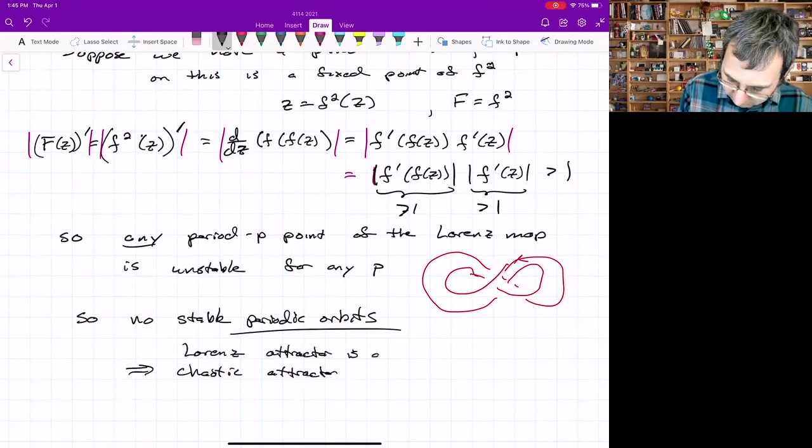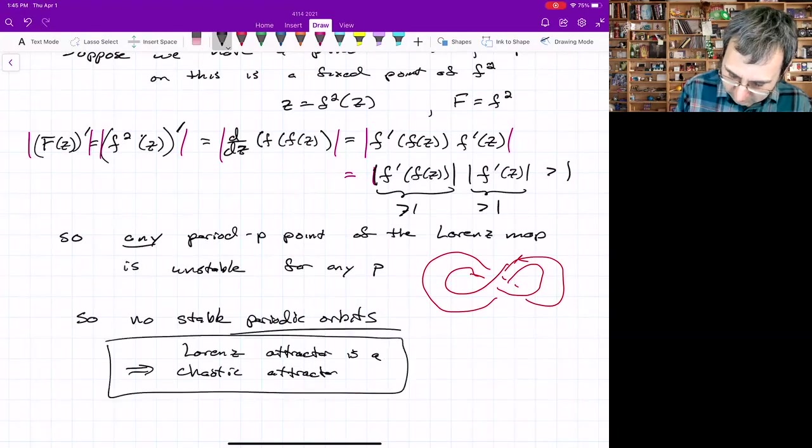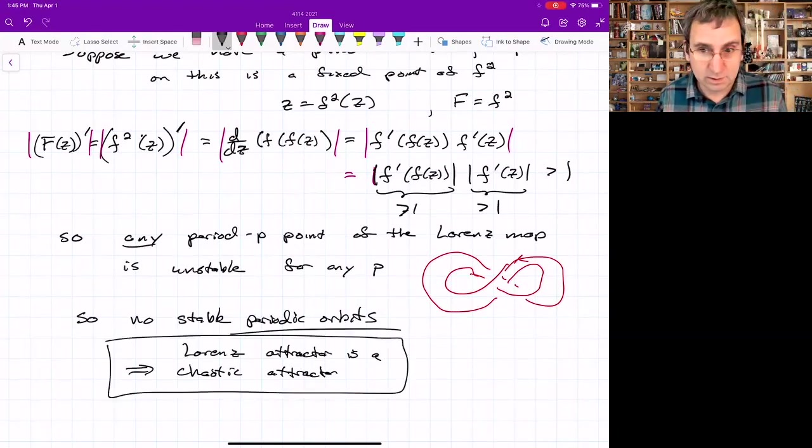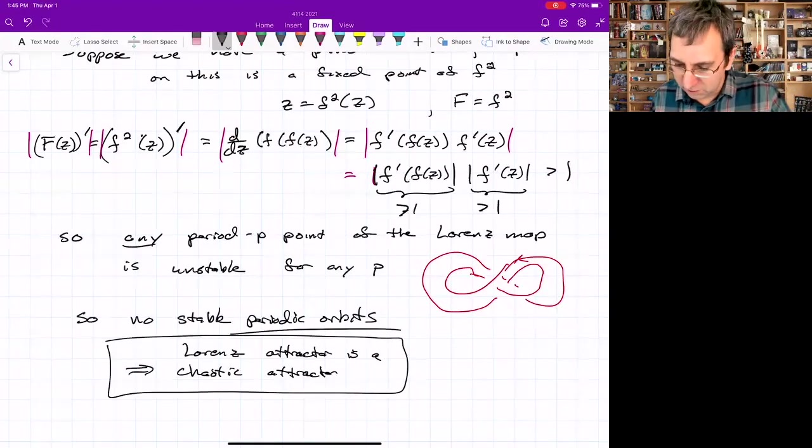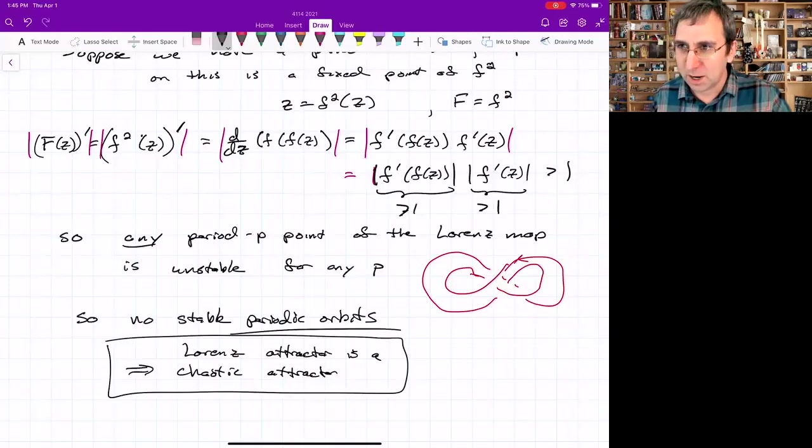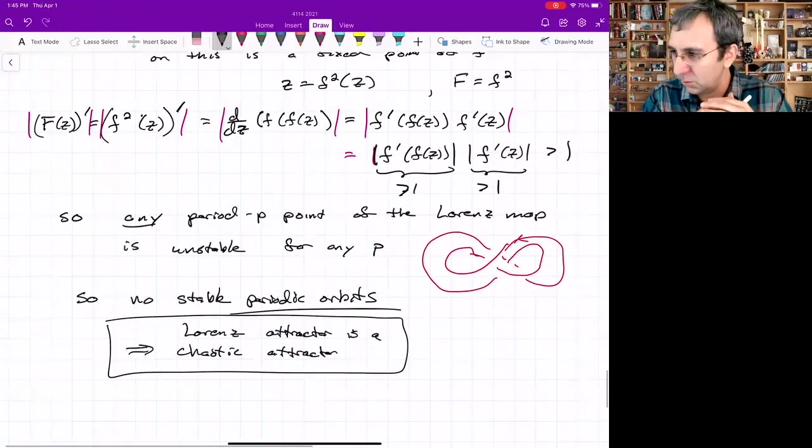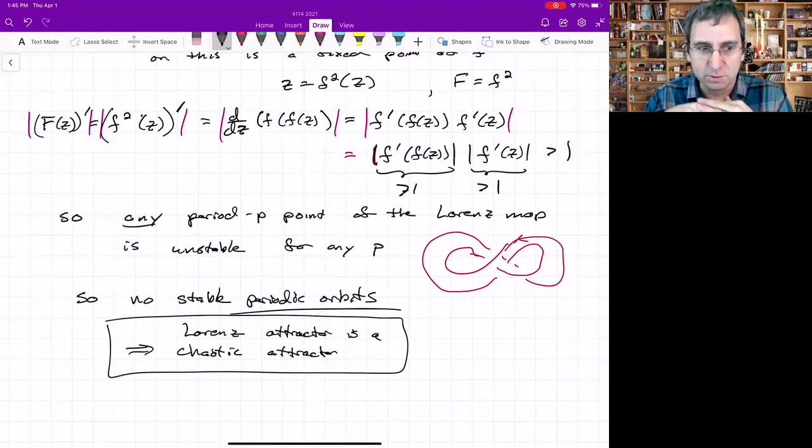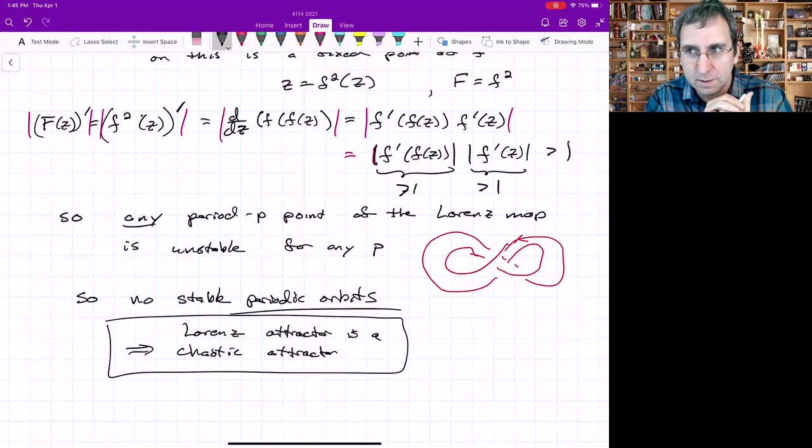So no stable periodic orbits, at least in that regime that we're talking about. So this was the argument that this is indeed a chaotic attractor. The Lorenz attractor is a chaotic attractor. I think it's clever, and pretty cool, and worth pondering. We're going to leave vector fields for a while, one-dimensional maps, and that's what we're going to be talking about next.